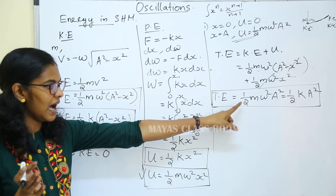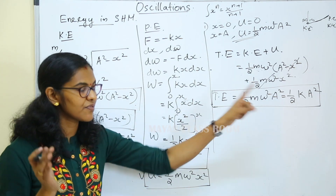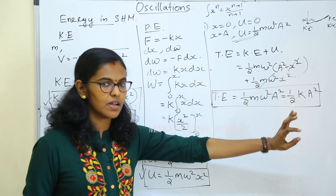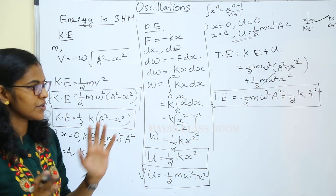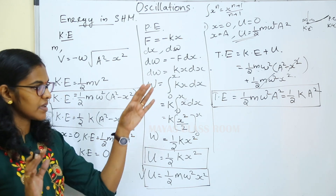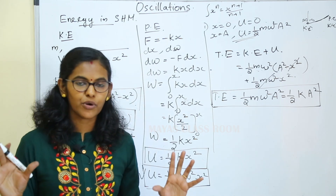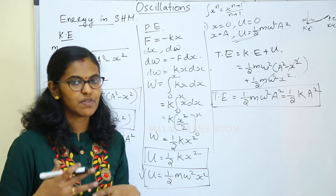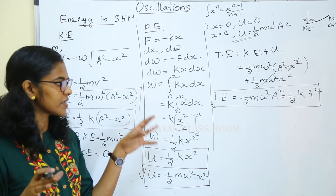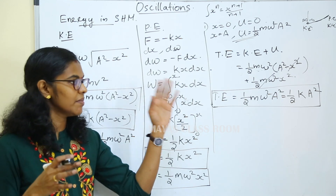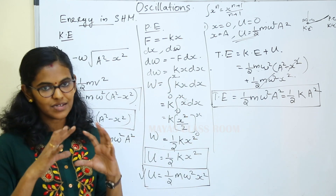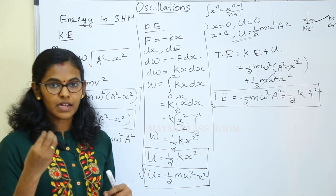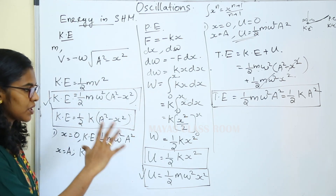Total energy is half m omega squared into a squared, or equivalently half k into a squared. Now, k is constant and amplitude a is constant in simple harmonic motion. Therefore, the total energy of simple harmonic motion is constant.